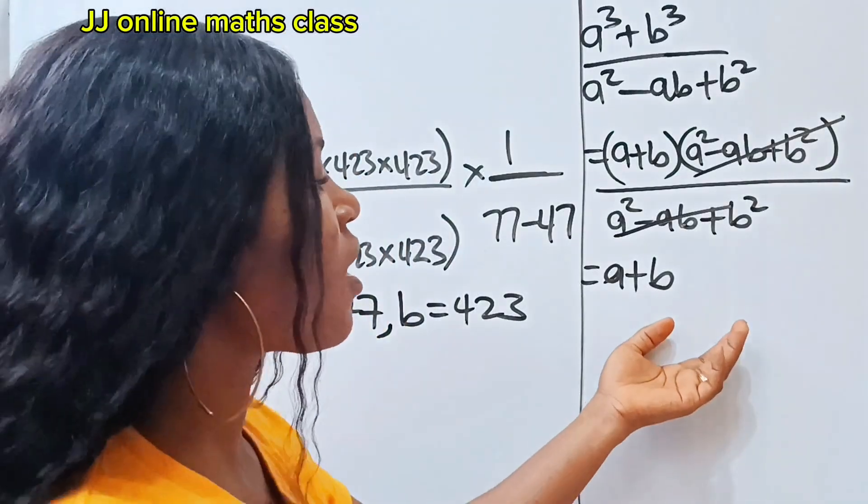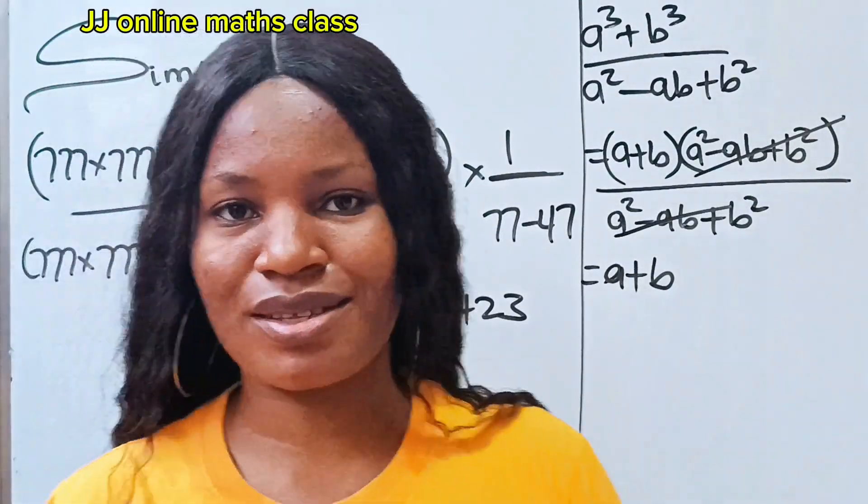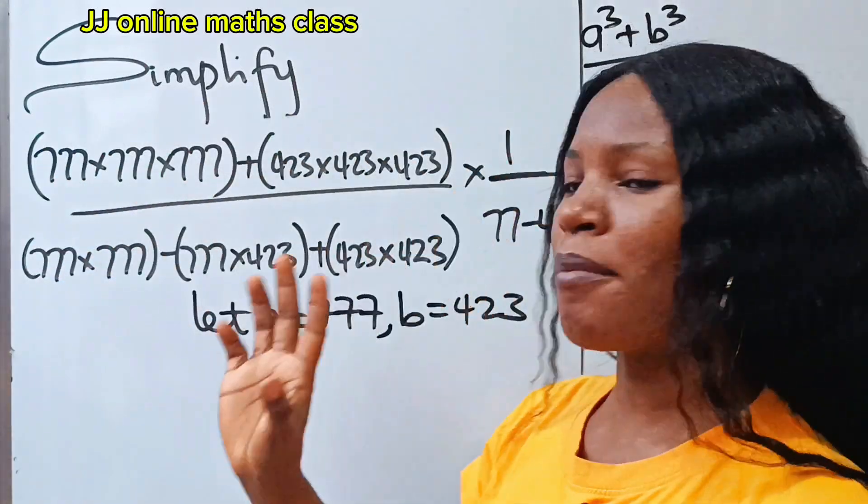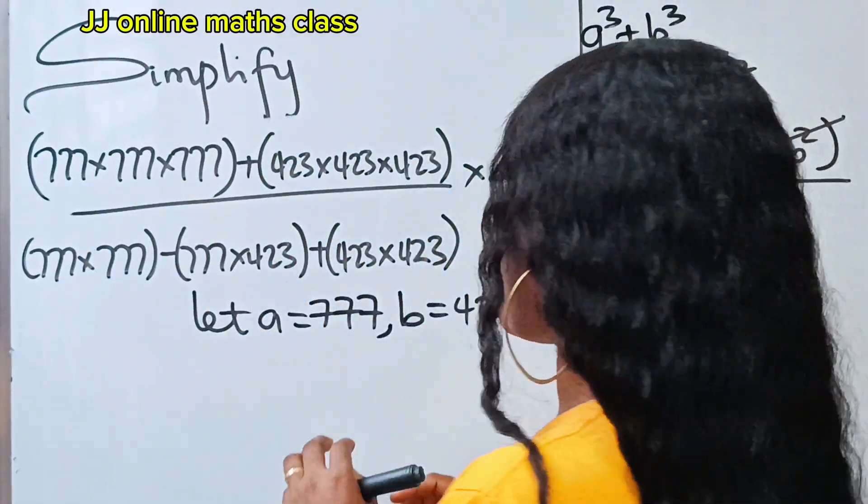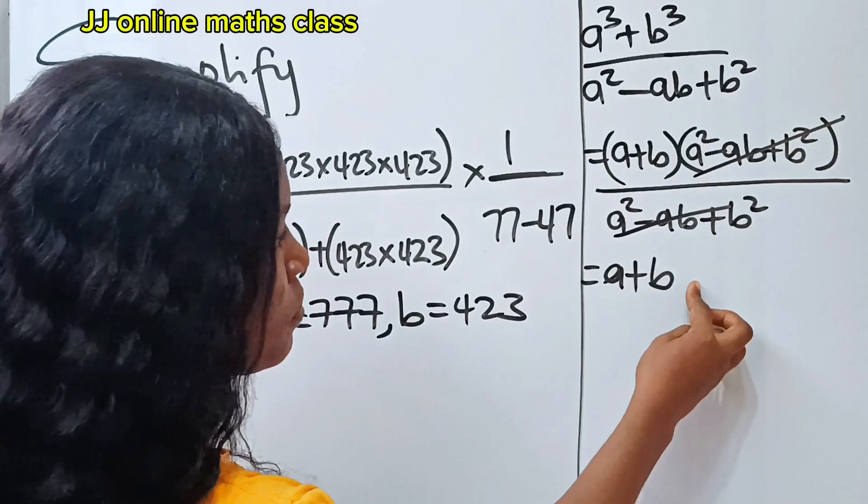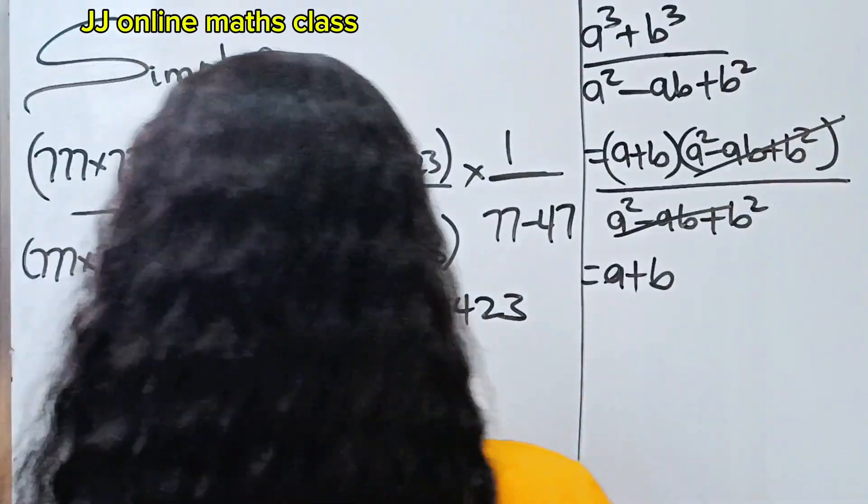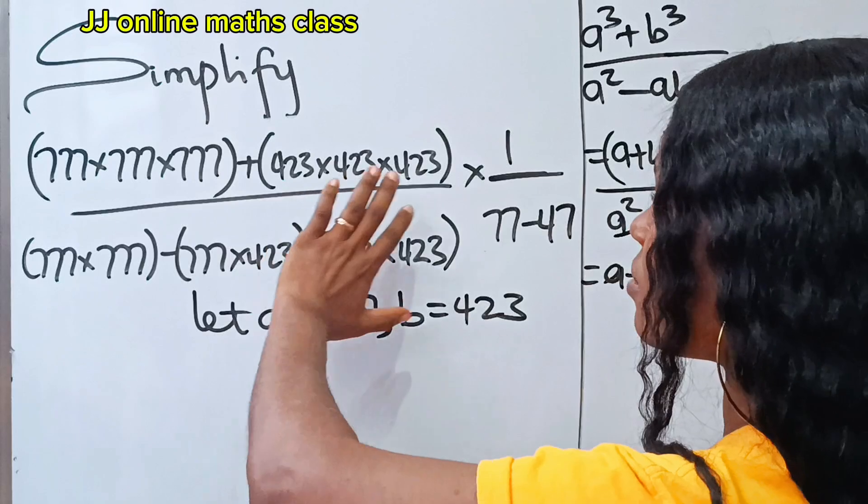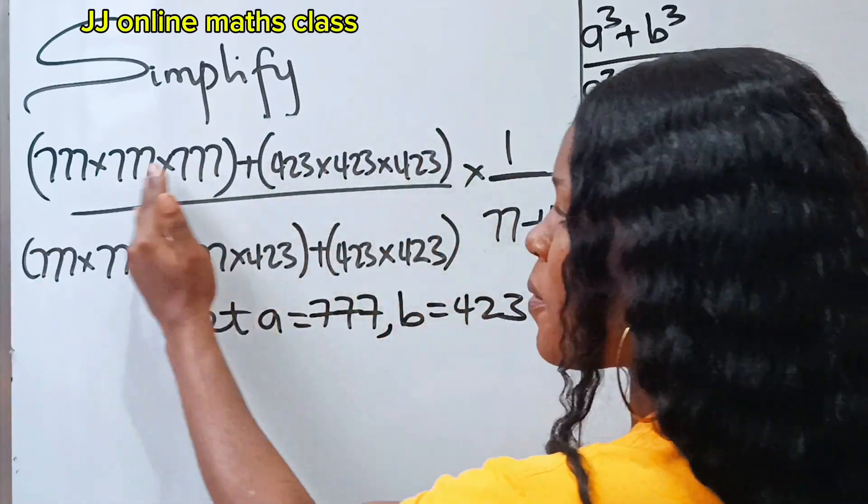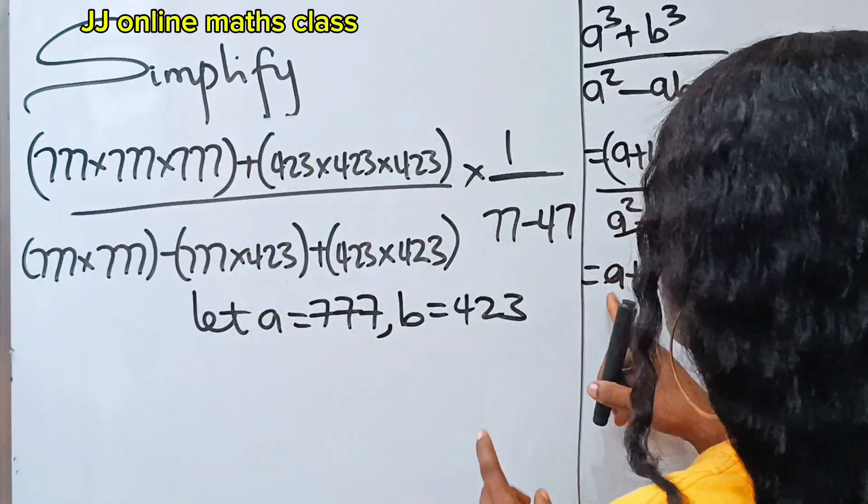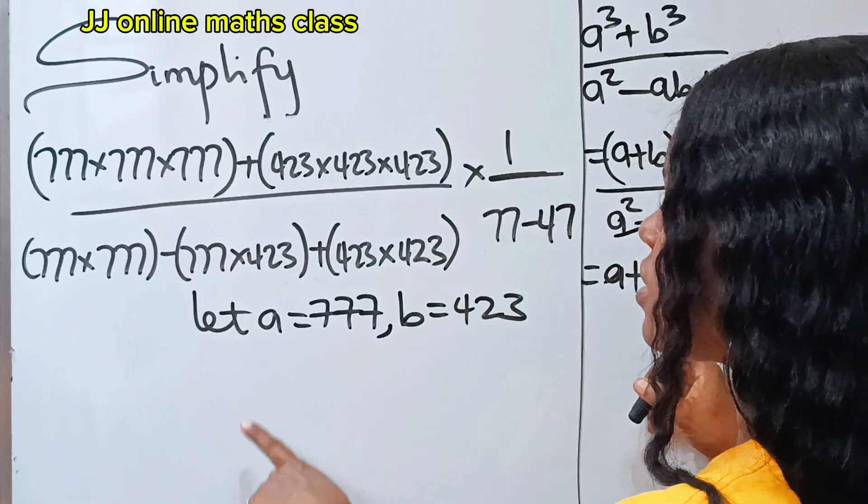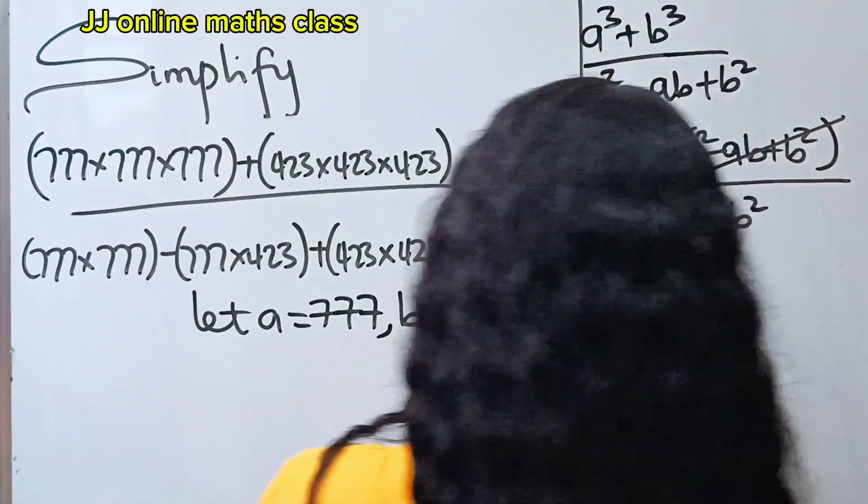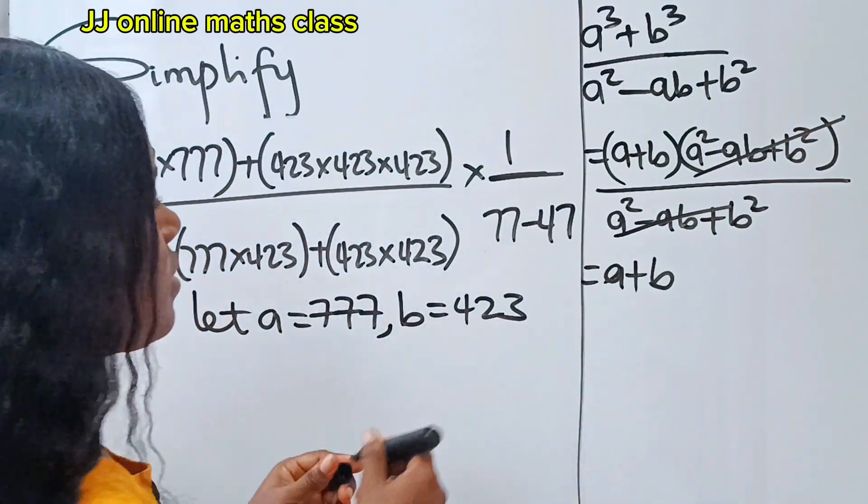Now let's continue. So this simply means that the whole of this can be gotten by doing what? If we add a plus b, simple. So we can actually replace the whole of this side, the left hand side of this expression, with a plus b, which is 777 plus 423.